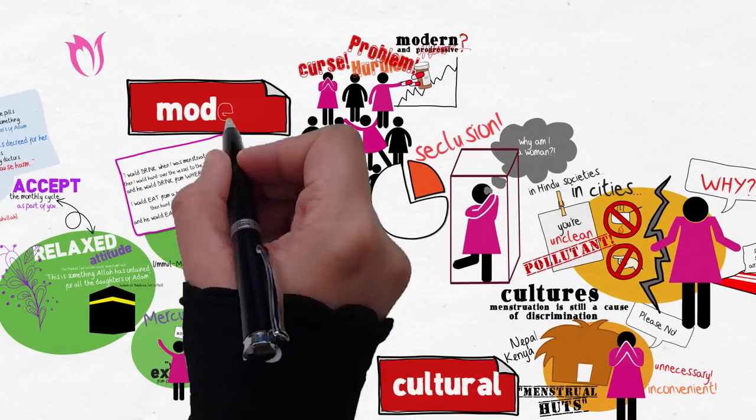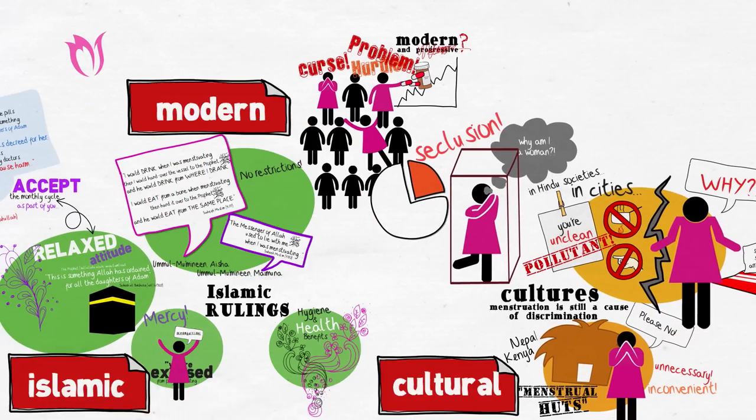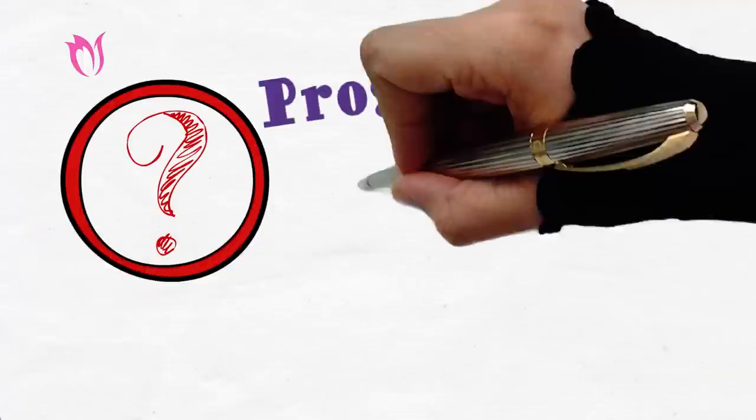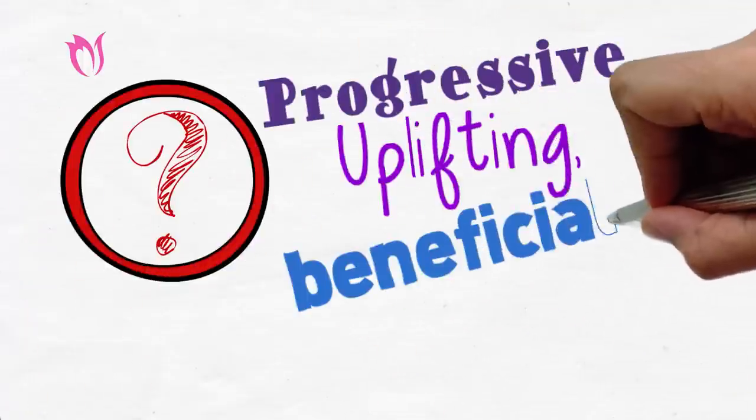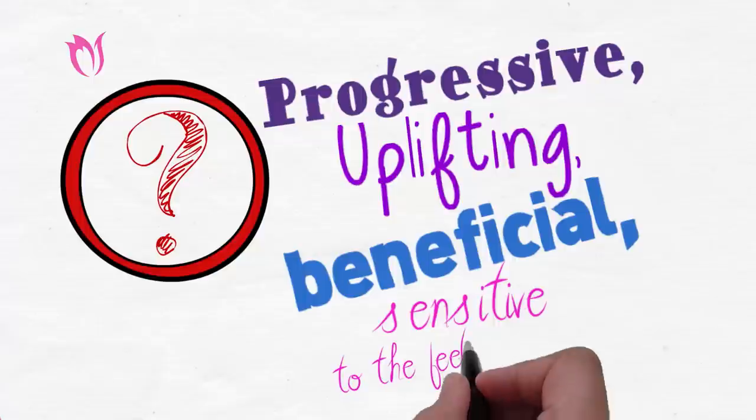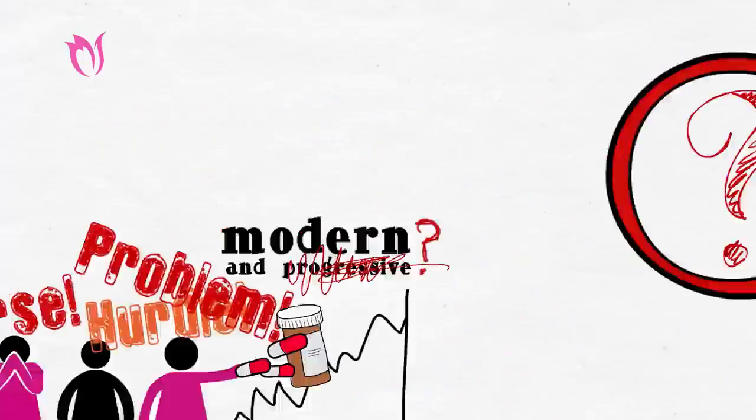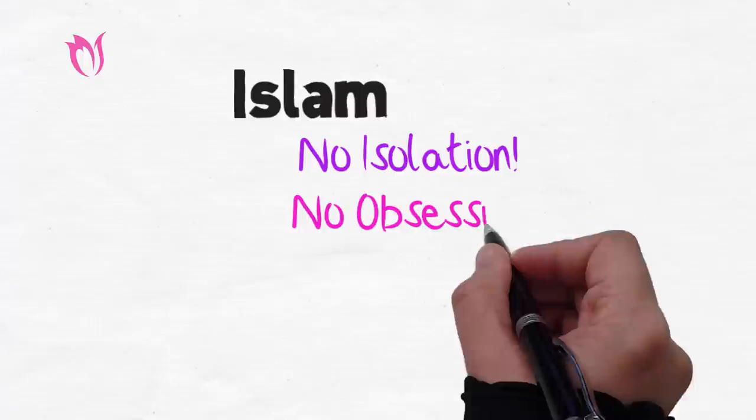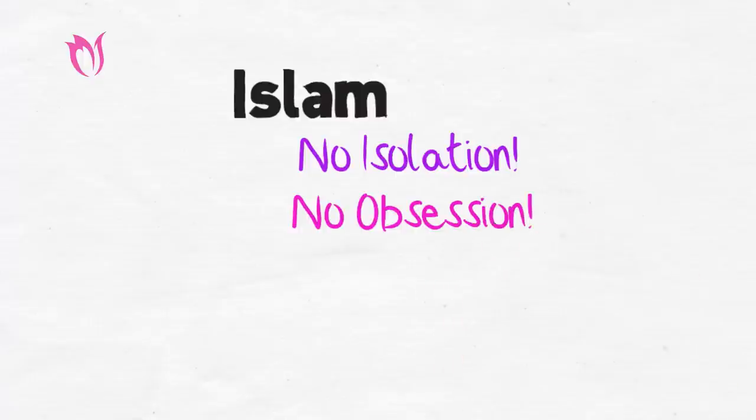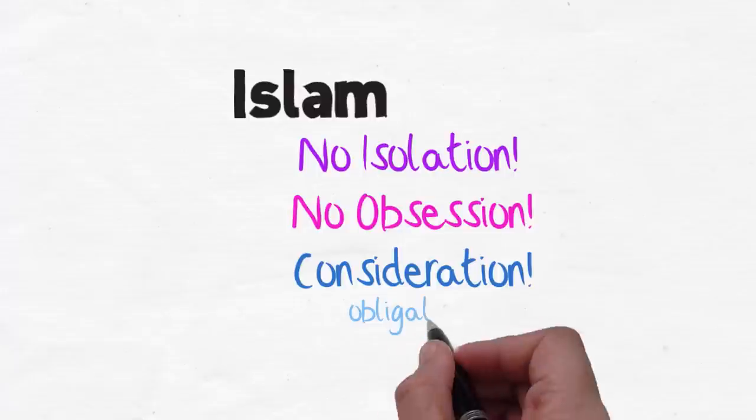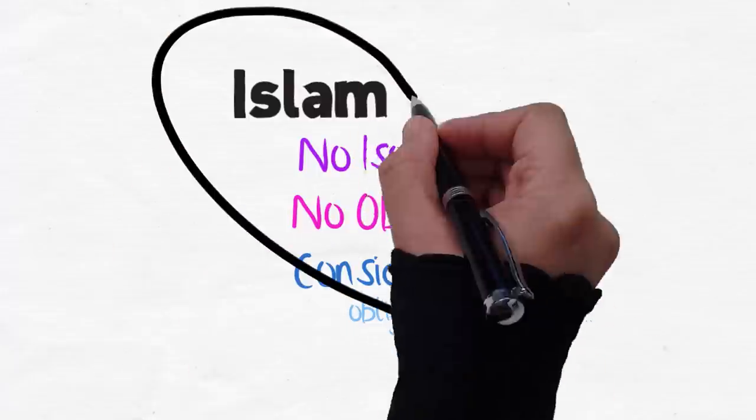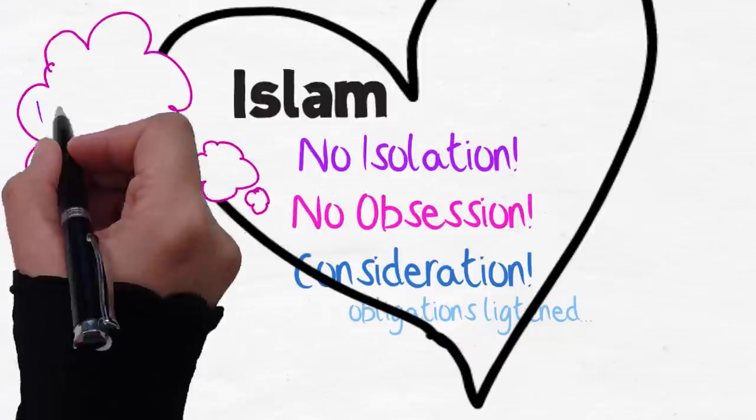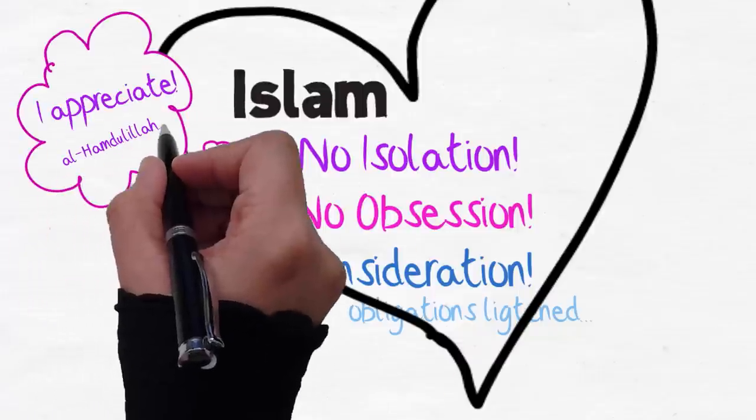Cultural, modern, or Islamic. Which of these attitudes are truly progressive, uplifting, beneficial, and sensitive to the feelings of a woman? In Islam, there is no complete isolation nor an obsession with making menstruation completely invisible. Instead, in consideration, the worships are lightened for her. And me being a woman, I truly appreciate the concessions allowed.